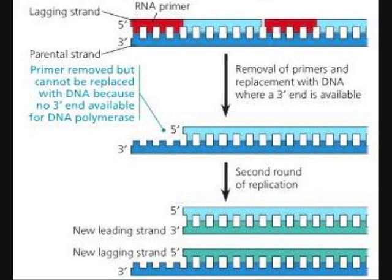The final primer cannot be replaced because there is no 3 end available. Consequently, a fragment of the initial DNA is lost during every replication, resulting in much shorter DNA molecules after several replications.